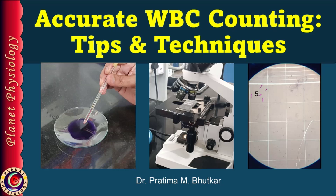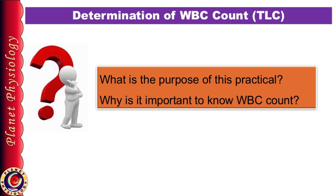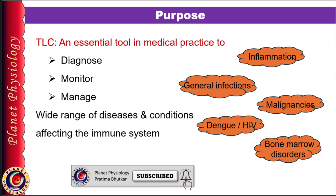I shall also discuss common mistakes students commit during this procedure and how to avoid them. Before we start, kindly pause the video and think: what's the purpose of determining WBC count? Why is it important to know this value? Leukocytes play an important role in defense against pathogens. Hence, TLC is an essential tool in medical practice for diagnosing, monitoring, and managing a wide range of diseases affecting the immune system. For example, increased TLC is indicative of infections, inflammation, or certain malignancies, whereas decreased TLC suggests immune suppression, bone marrow disorders, or certain infections like dengue or HIV.